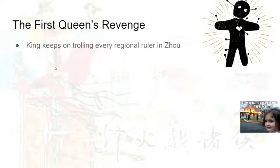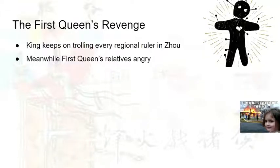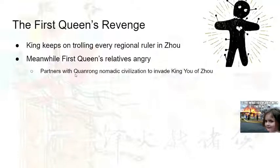Meanwhile, remember that first queen that King Yuzhou ditched? The king keeps on trolling every regional ruler — doing the same thing over and over again. Meanwhile, the first queen's relatives are very angry, because not only was the first queen ditched, but the first queen's son — the potential heir of Zhou — was passed over for rulership as well. So they partner with the Quan Rong nomadic civilization to invade King Yuzhou.